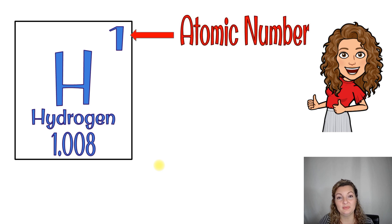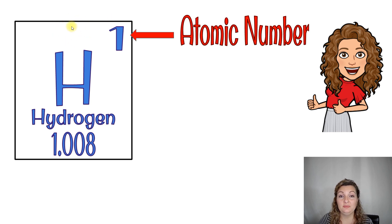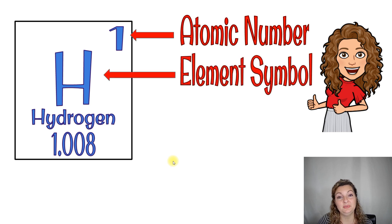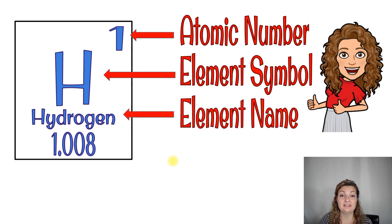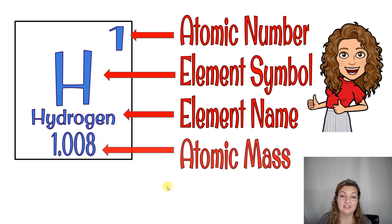The first one is the atomic number. The atomic number is in the upper right-hand corner, or occasionally you'll find it in the upper middle — it's all going to be the same thing. The next one is your element symbol. It will be a capital letter, and if there is a second letter next to it, it will be lowercase. The element symbol is a representation of the element name — so H is representing hydrogen. The last thing is the atomic mass, or the entire mass of that particular element.